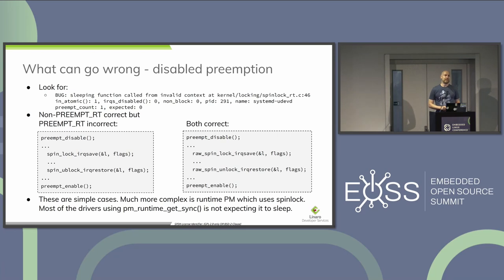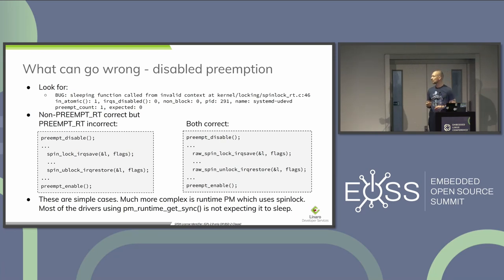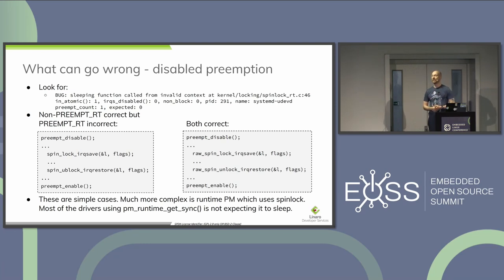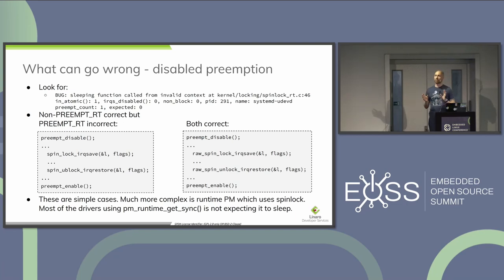Much trickier is the situation with runtime PM. Runtime PM uses spin locks quite heavily, meaning certain functions like pm_runtime_get_sync, which is a synchronous call, may now actually sleep — and many drivers are not prepared for this. This case is not fully solved. An example of such unsolved code is the CPU idle loop, which disables preemption and then certain CPU idle drivers may use runtime PM, creating a problem. My solution was to partially disable the CPU idle so the driver was not putting individual CPUs to sleep.